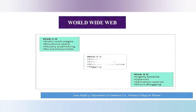Web 1.0 is the first stage of the World Wide Web evolution. It has four design essentials: static web pages, browser-based work, mostly publishing, and no communities.